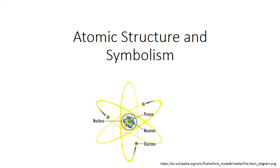We now know that the atom is actually made up of smaller subatomic particles: the proton, neutron, and electron. Furthermore, we know that it's the different combinations of these particles that ultimately determine the properties of the atom and the elements. In this PowerPoint, we'll explore the properties of these particles and how they combine in different atoms. We'll also discuss how atomic notation can be used to indicate these different combinations.